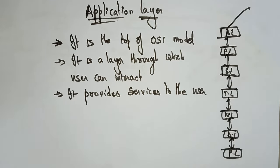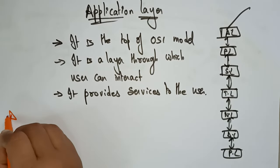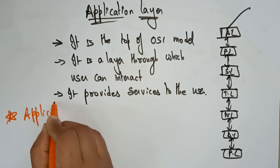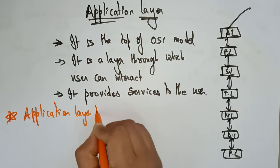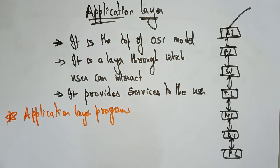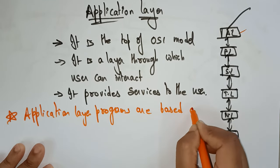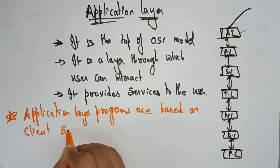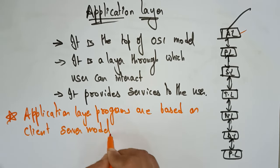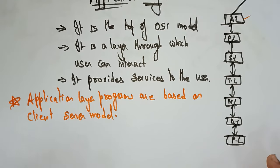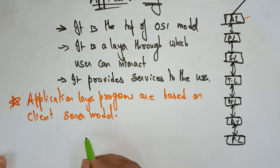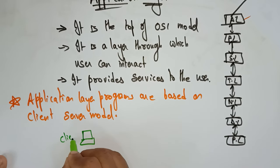The application layer programs are completely based on the client-server model. Whatever programs are present in the application layer are based on the client-server model. I think you guys already know the client-server model — just like that, the application layer also works on the client-server model. Let me explain with a simple example.